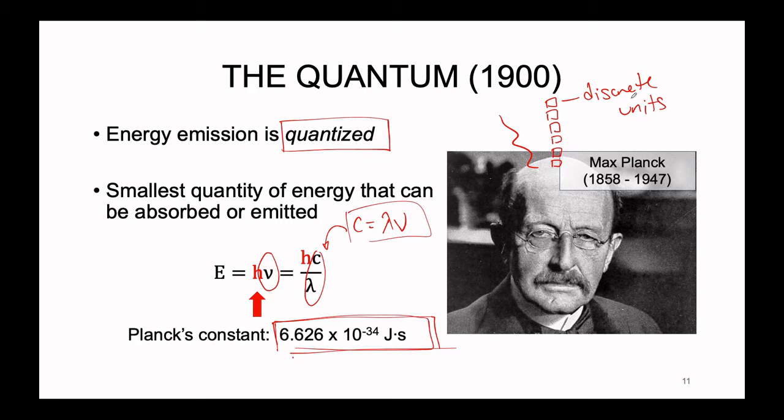The discrete unit — that little packet of energy — is very, very small. 10 to the negative 34 is an incredibly tiny number. It also makes sense: subatomic particles have very, very tiny masses. So anytime we are talking about subatomic particles and energy and how they interact, we're going to have to start paying attention to quantum physics. This is not continuous physics. This is non-Newtonian, discontinuous, strange physics.